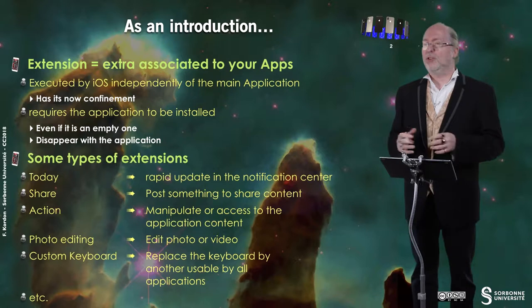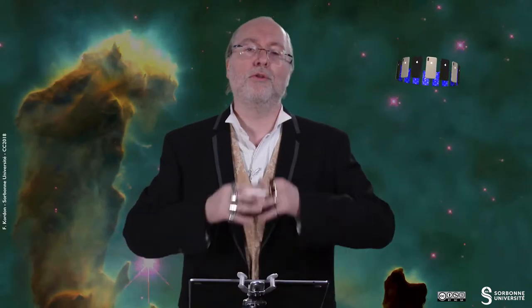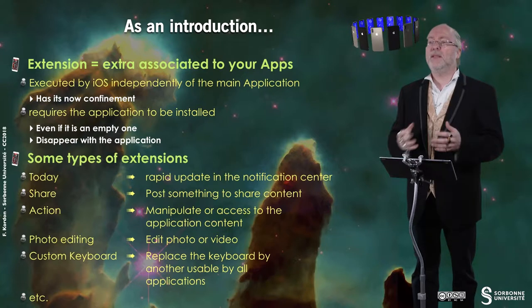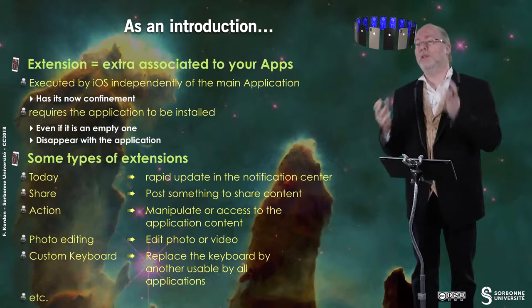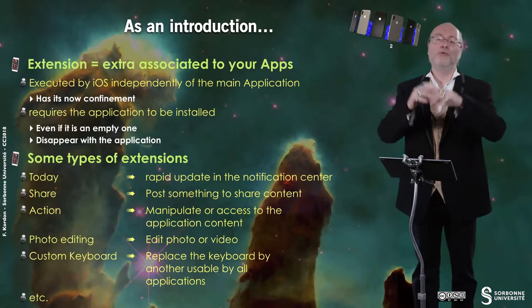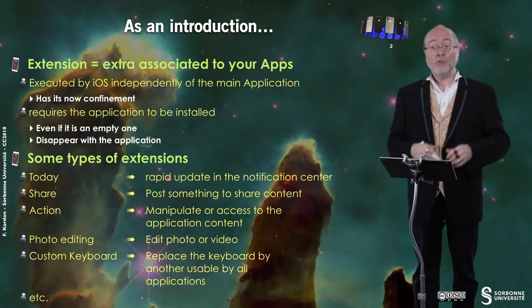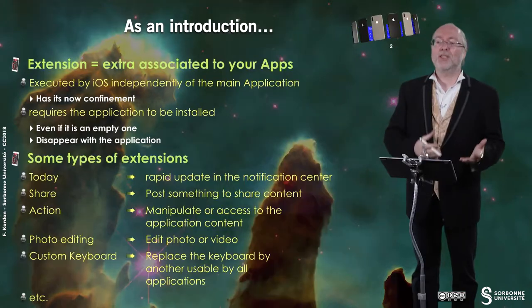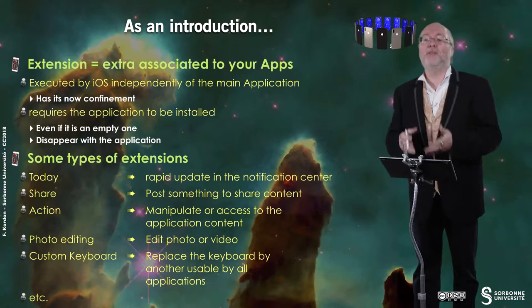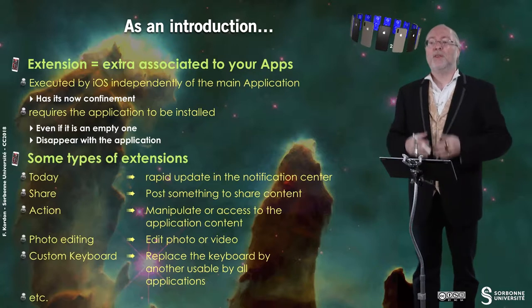You have several types of extensions — numerous types. I will just show you the major ones. The first one is a Today extension, and this is the one I will give you an example on. It's a rapid update in the notification center of data typically related to your application. For example, a weather forecast application will export a Today extension that allows you to have a bit of the data. You also have share extensions, action extensions, photo editing extensions, and custom keyboard extensions that allow you to replace or add a keyboard to the list of keyboards usable for all applications.